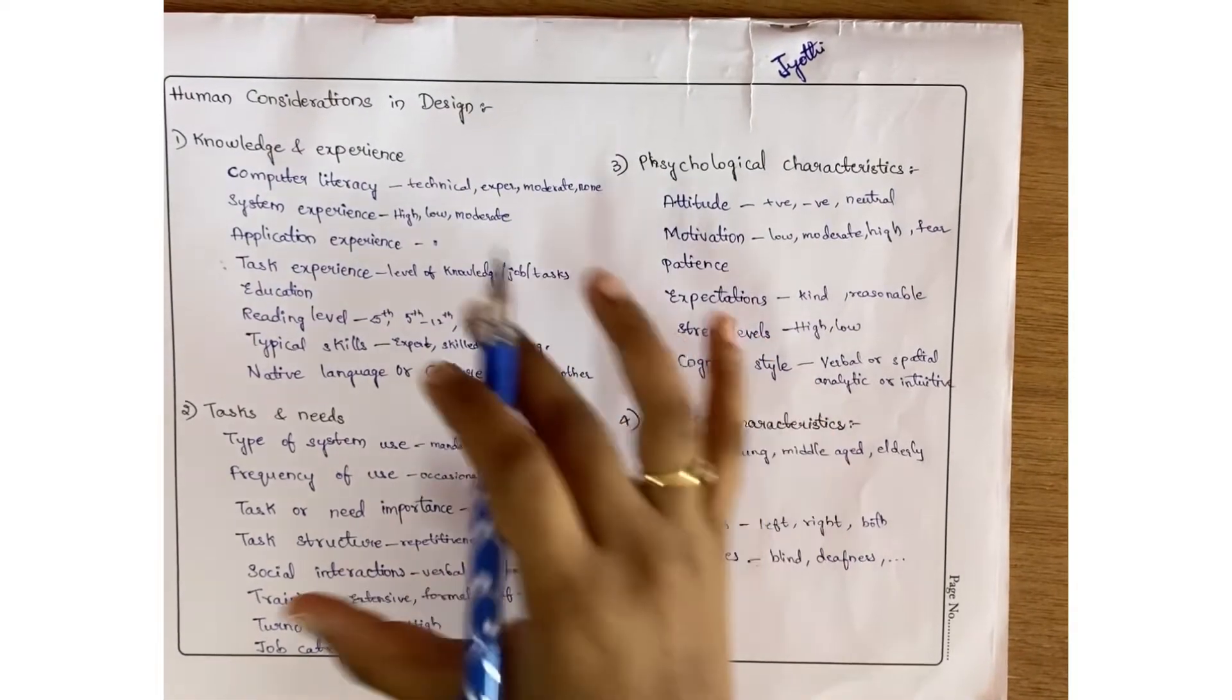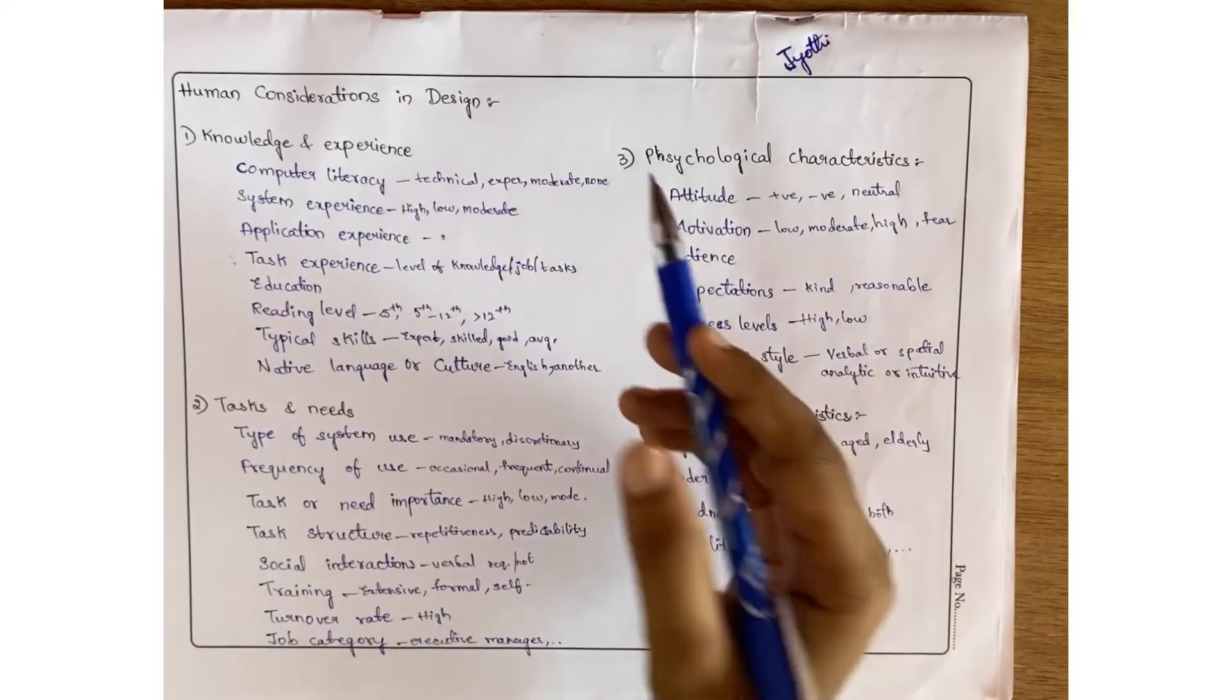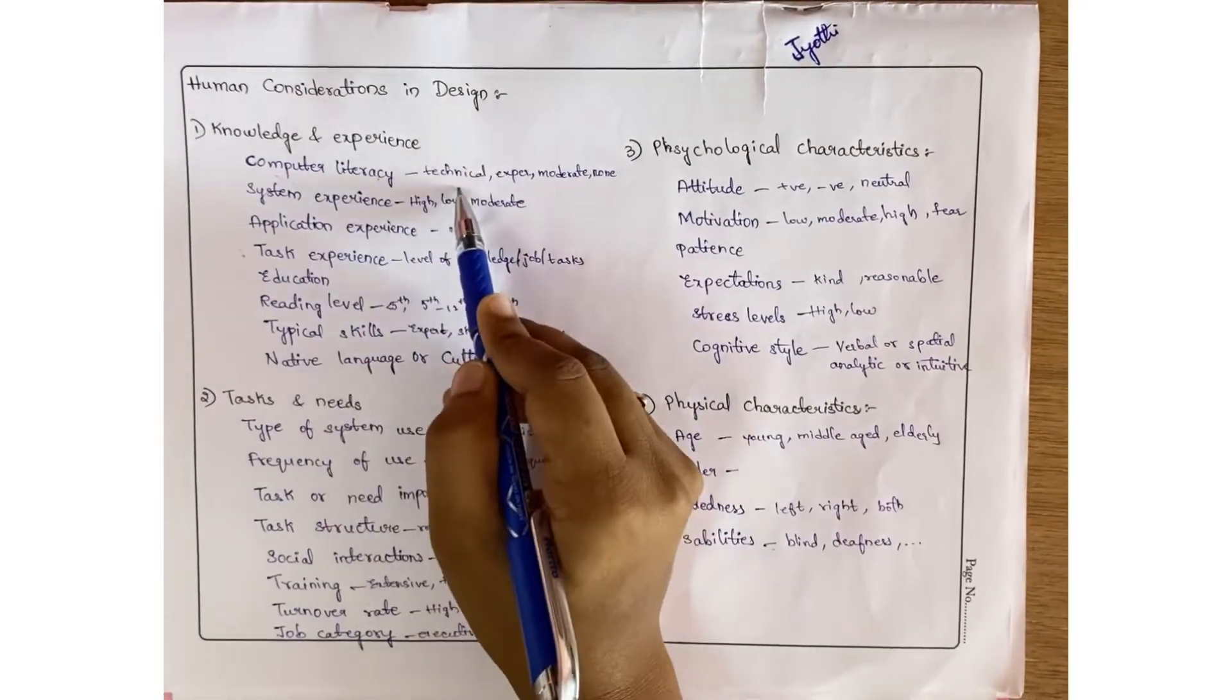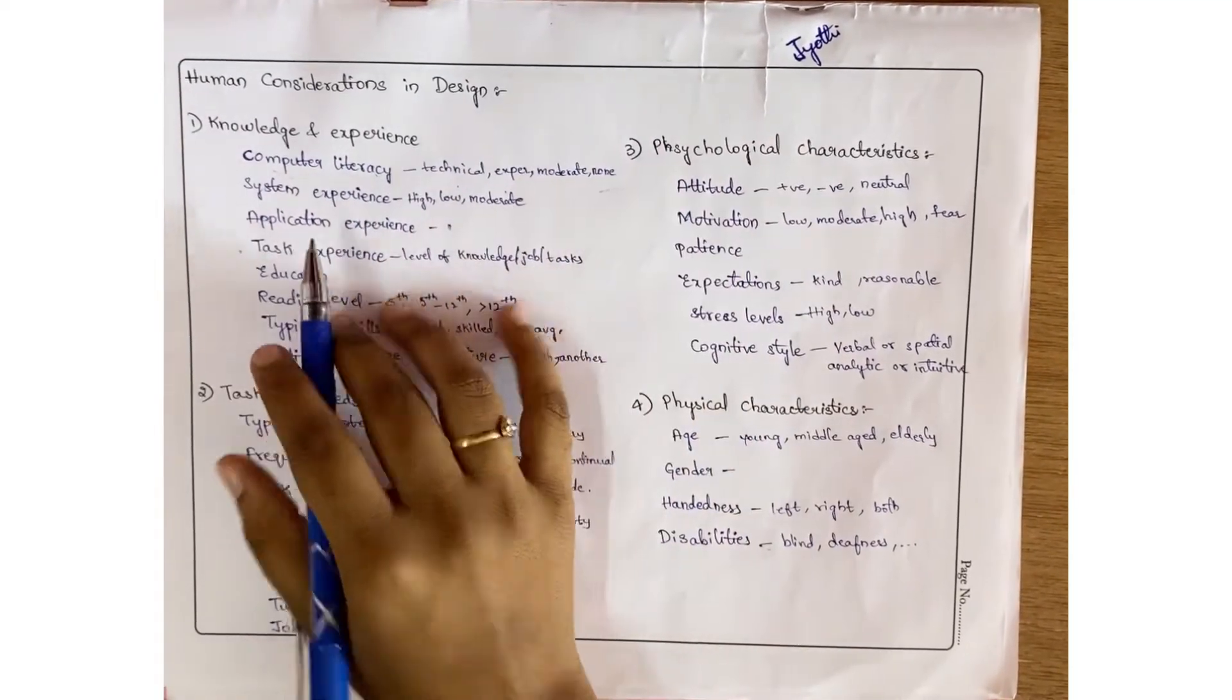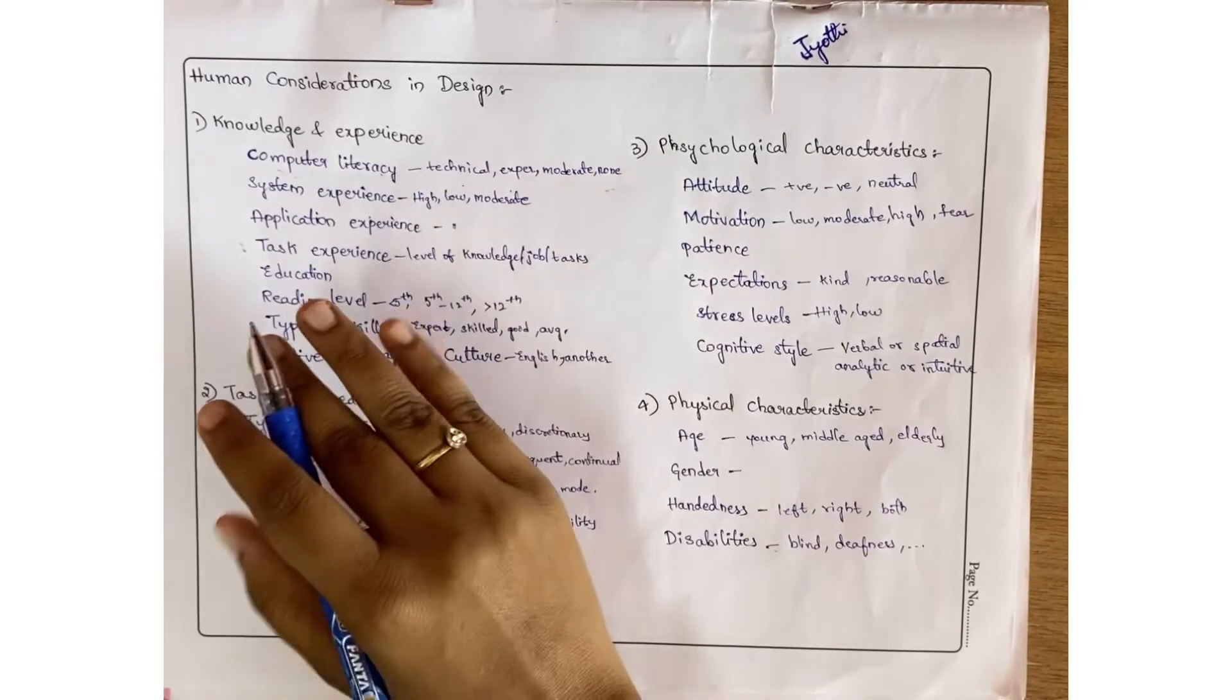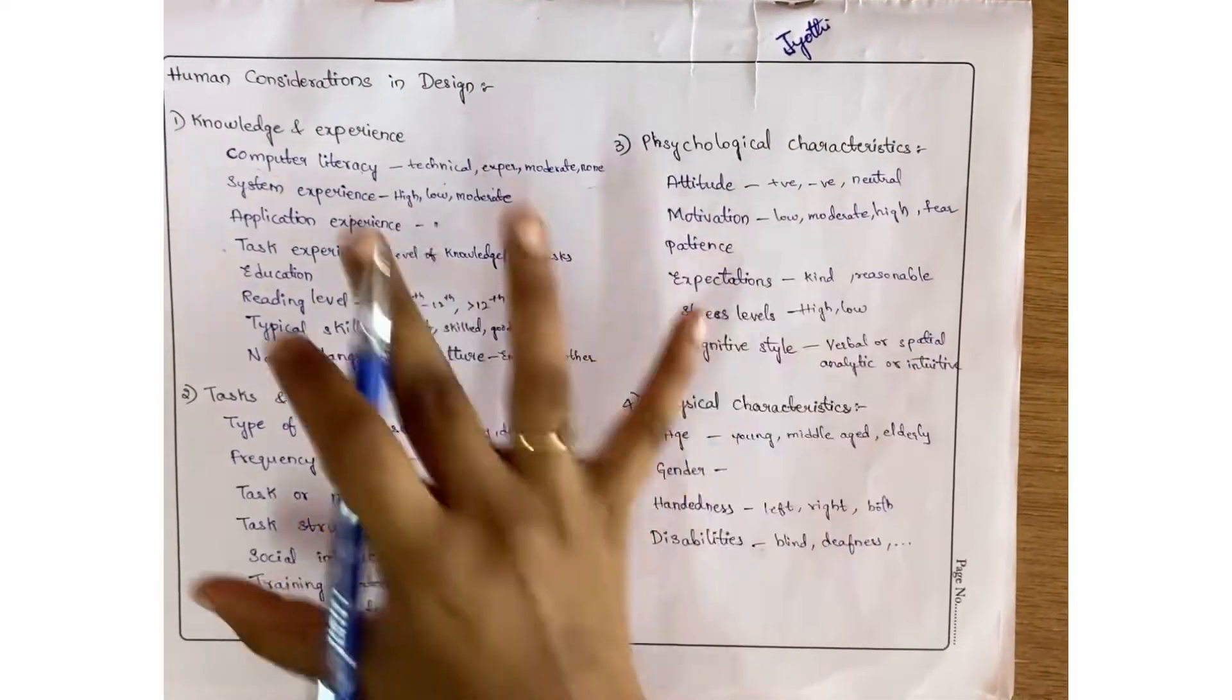We need to consider all the measures - how you will consider his knowledge or experience. If you take computer literacy, he may be very technical, expert, moderate knowledge, or none - he doesn't have any knowledge in computer literacy. Coming to system experience, he may have very high experience, low, or moderate. So this topic is completely just the measures of everything you are considering.